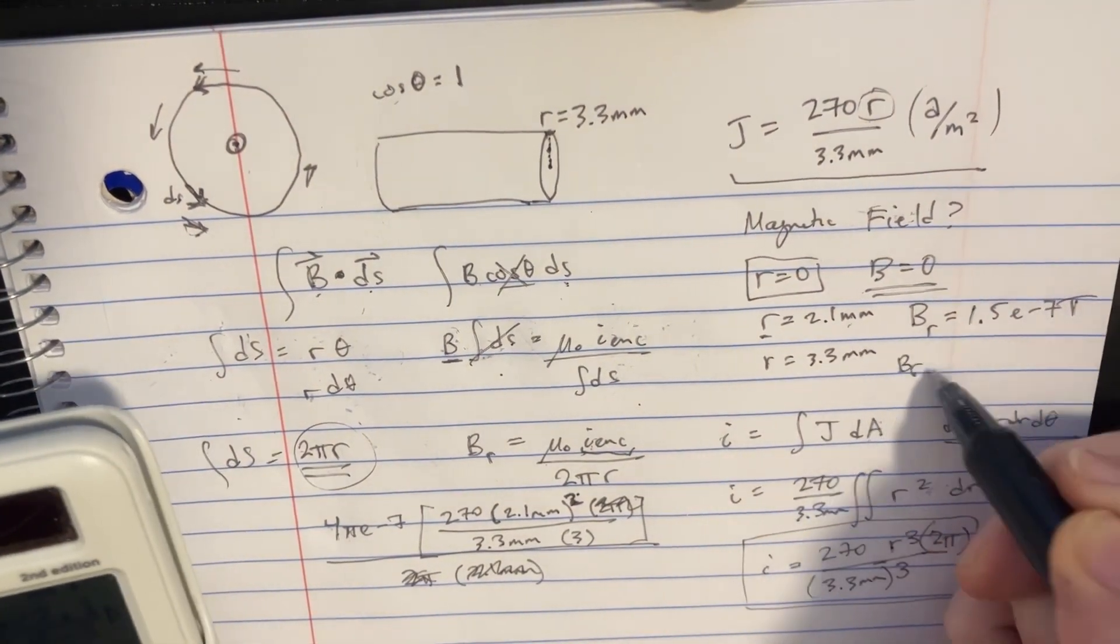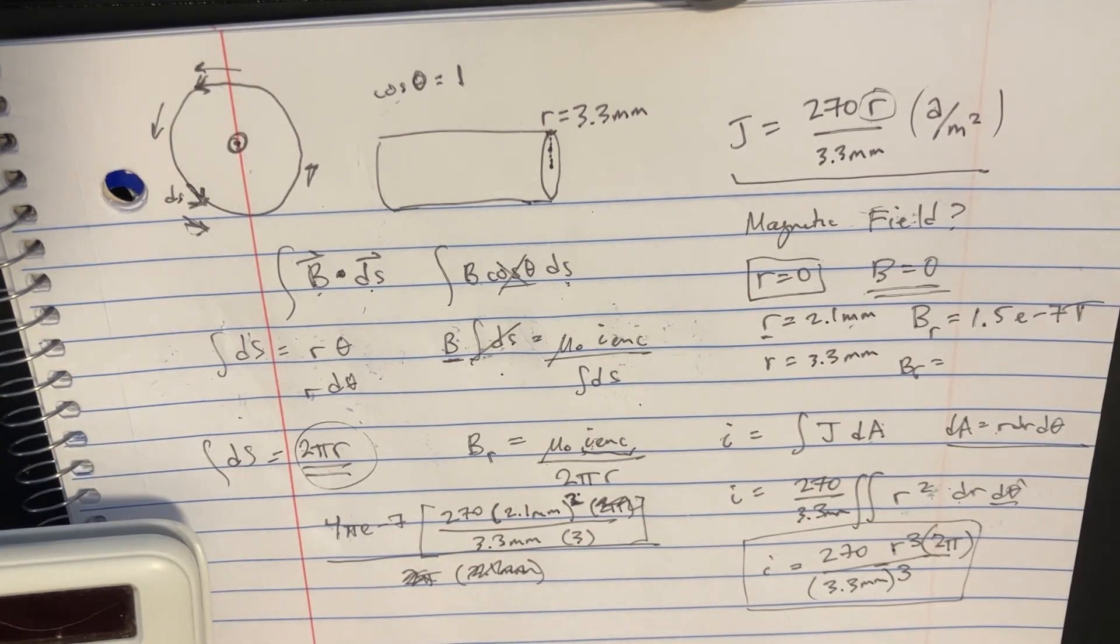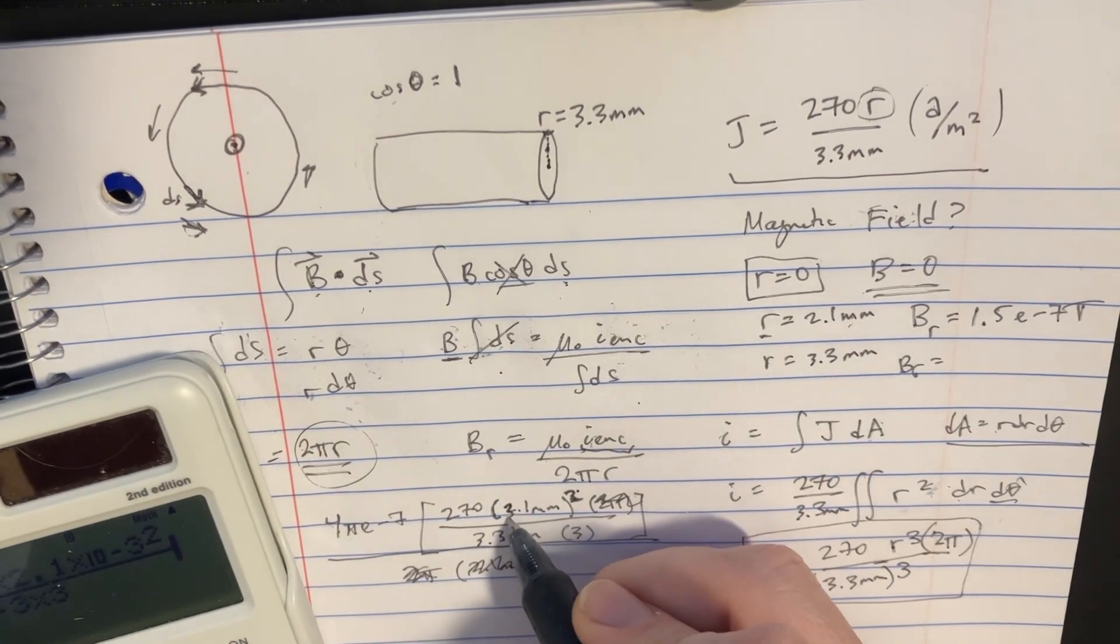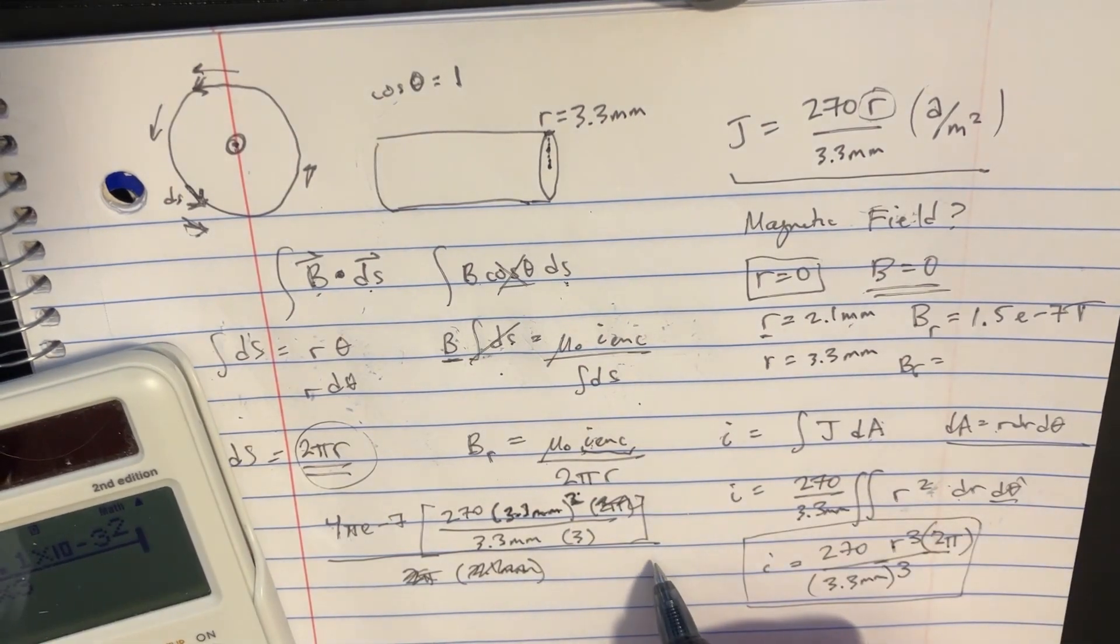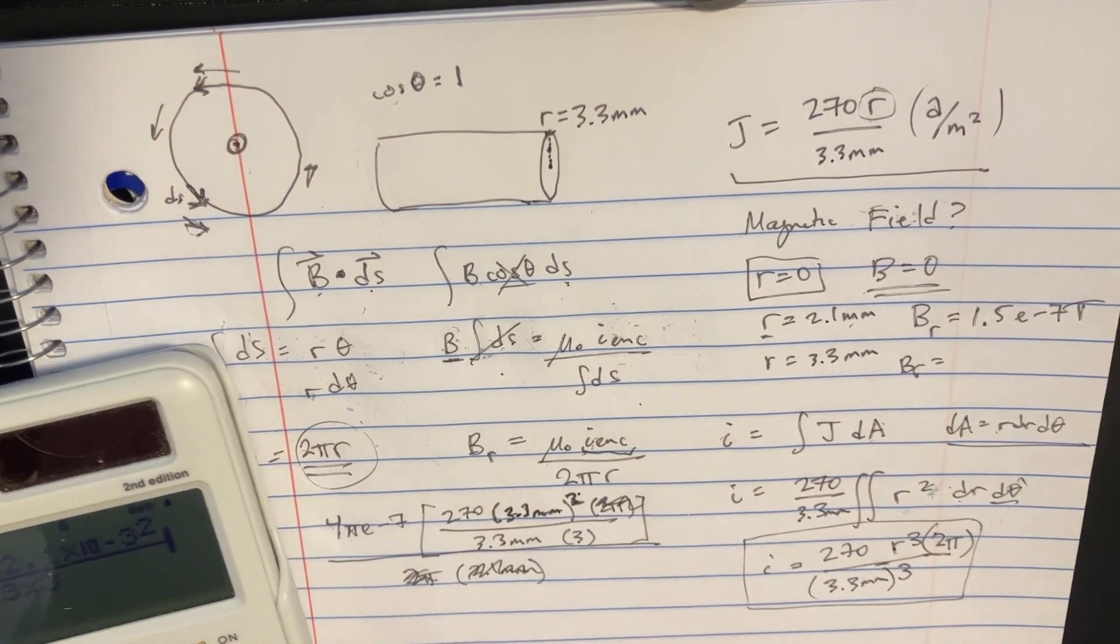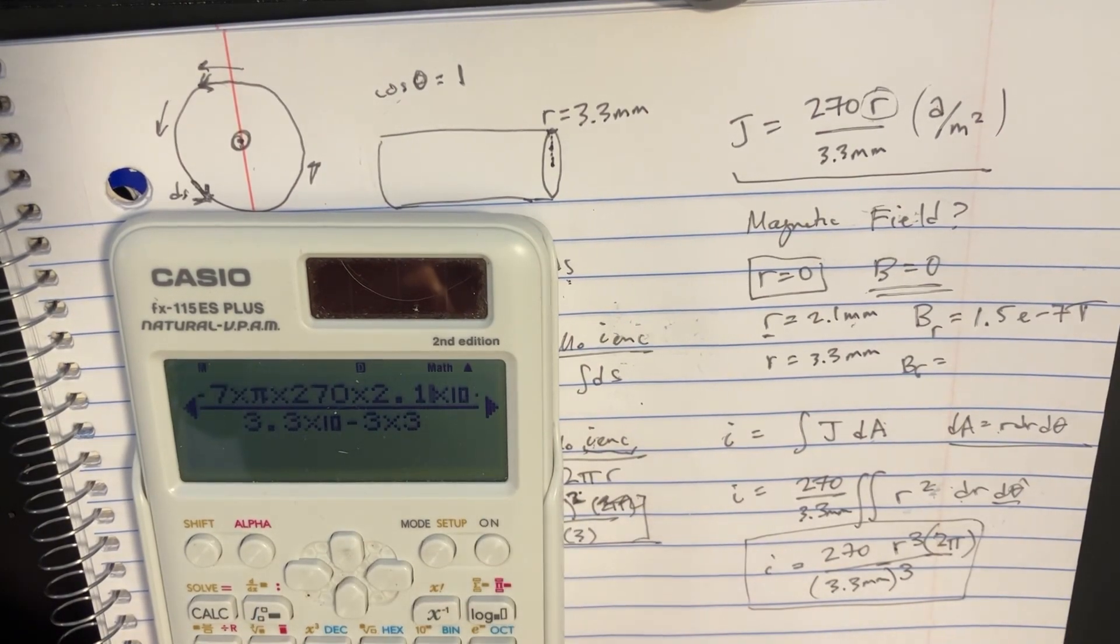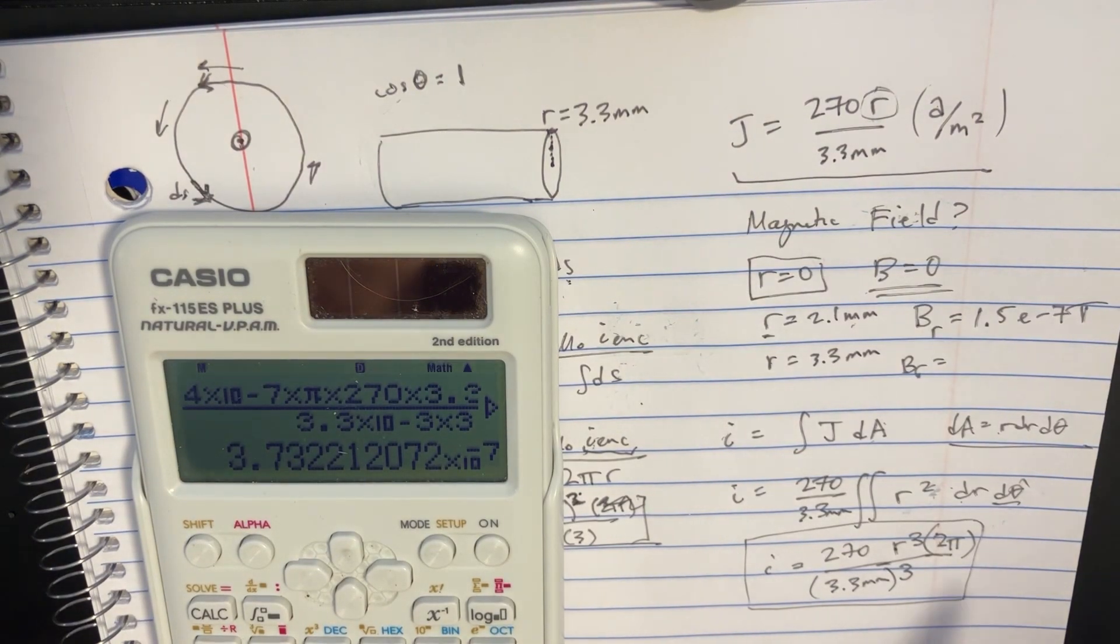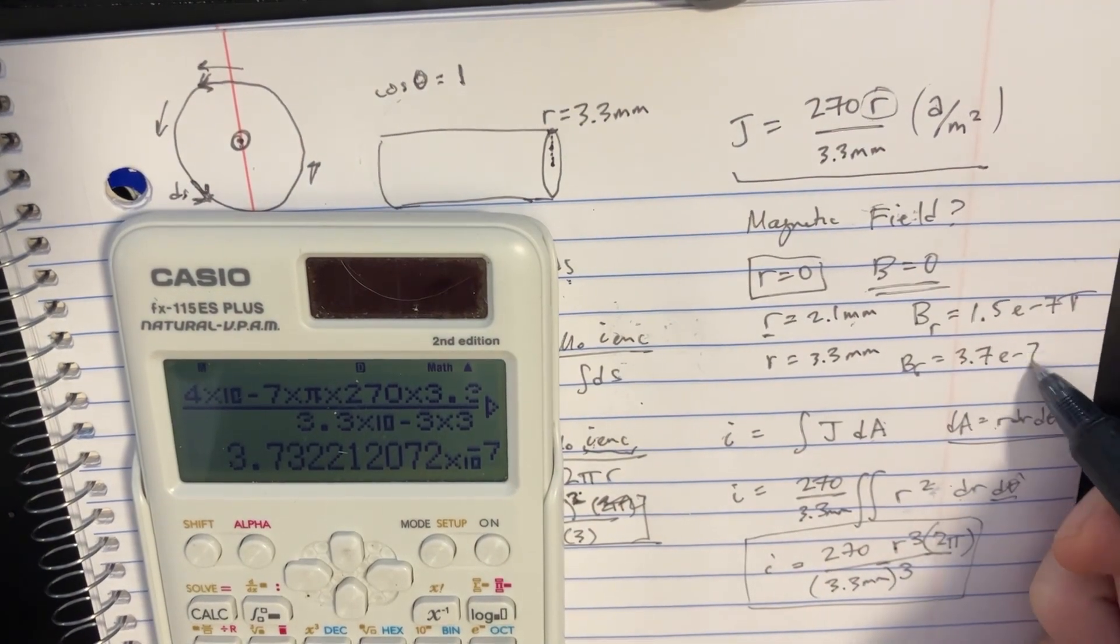And then we can try the next one. Basically using the same equation, right? I think the only thing we want to be changing here is going to be 3.3 millimeters. And I think that's about it. So let's go and change that. 3.3. And so there we go. We got the second answer is going to be 3.7 times 10 to the negative 7 tesla.